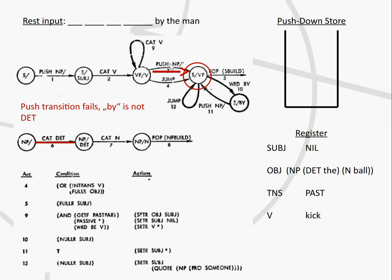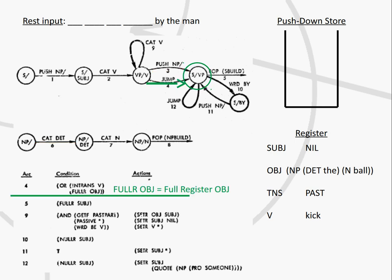Here we have two different transitions we could take. The first would fail because the next word is 'by' and the automaton would not find it as a determiner in the lexicon, so we cannot take that transition. The second transition — which we had before, previously only for intransitive verbs — has been extended: it can now also be used if the object has already been set, which is the case for this passive sentence.